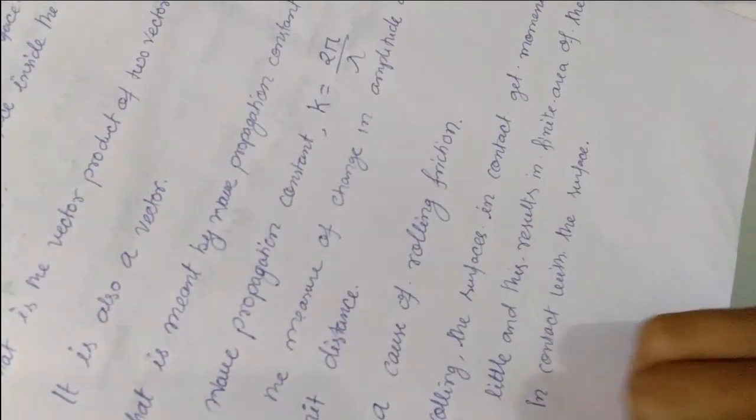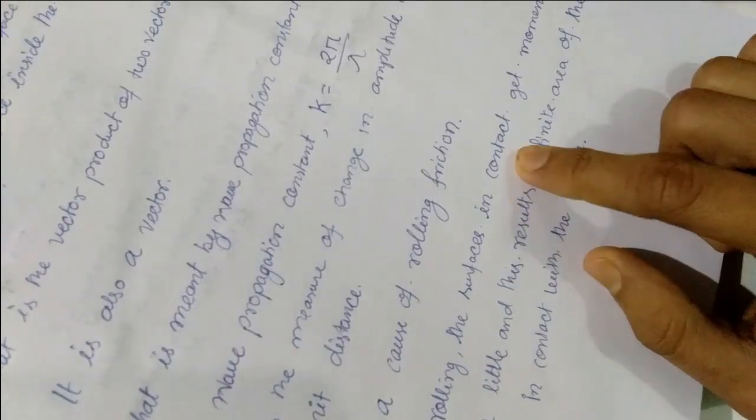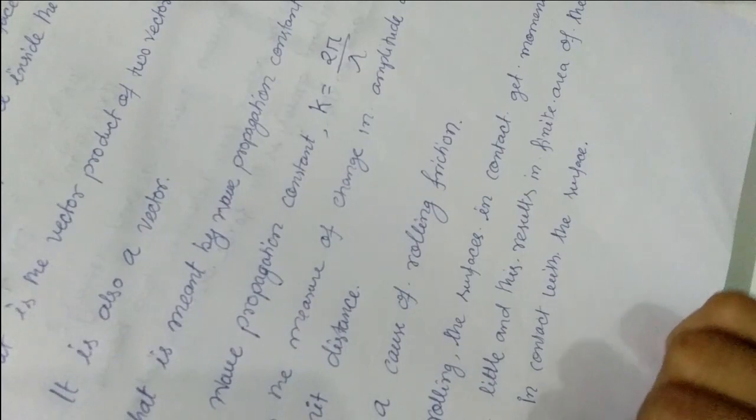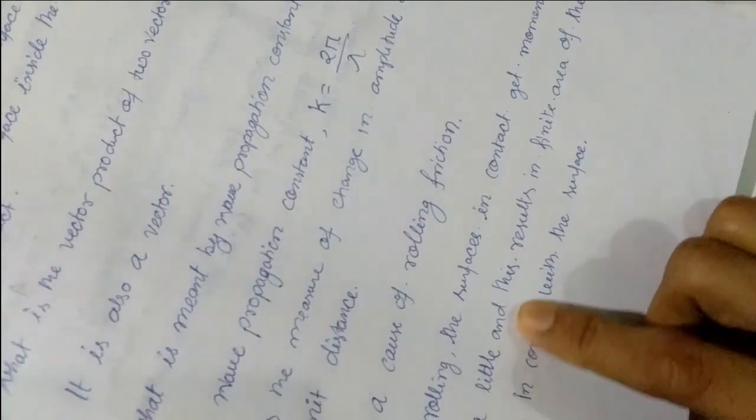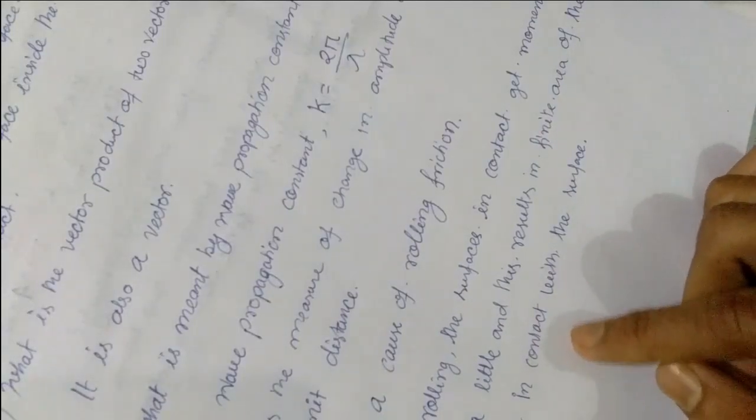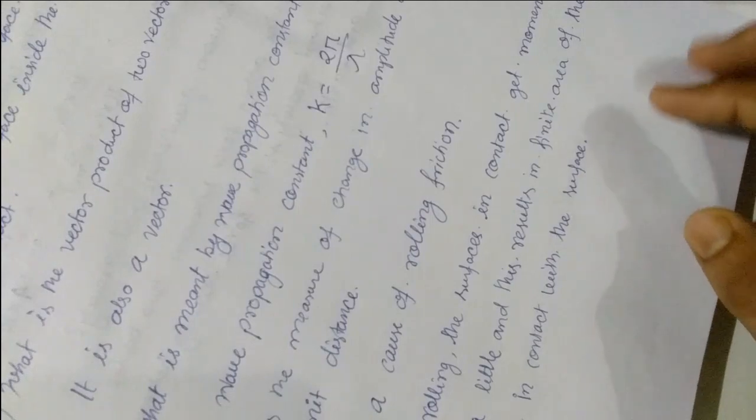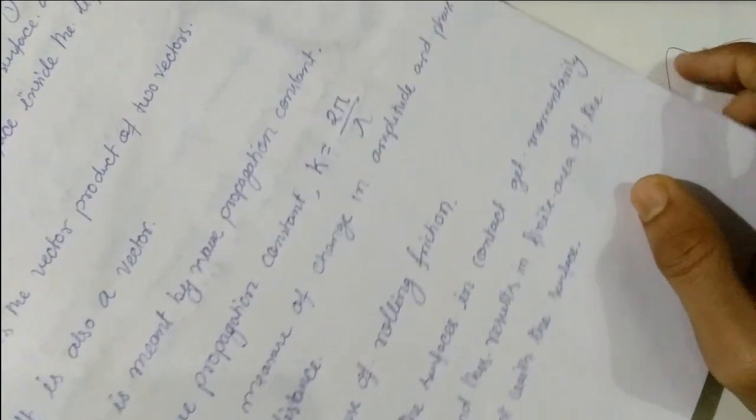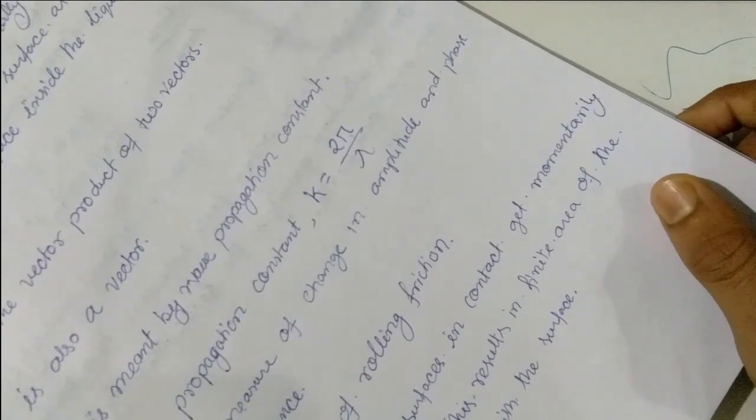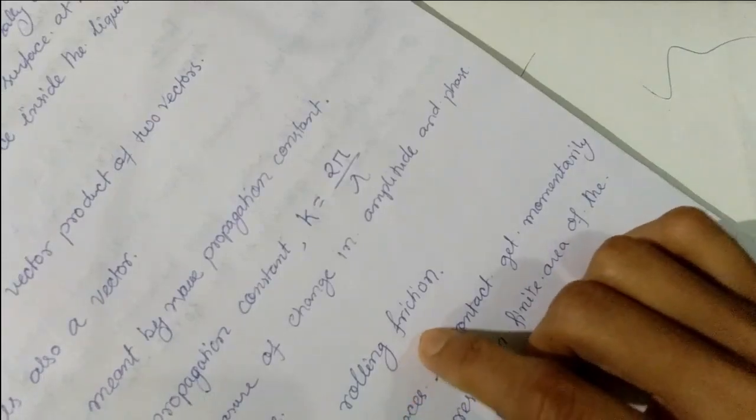Next question: What is the cause of rolling friction? During rolling, the surfaces in contact get momentarily deformed a little, and this results in a finite area of the body being in contact with the surface. This momentary deformation is the cause of rolling friction.